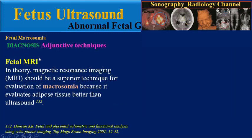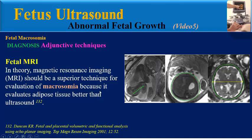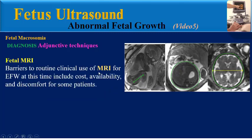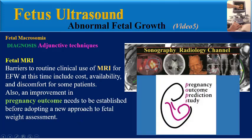Fetal MRI: In theory, MRI should be a superior technique for evaluation of macrosomia because it evaluates adipose tissue better than ultrasound. Barriers to routine clinical use of MRI for estimated fetal weight include cost, availability, and discomfort for some patients. Also, an improvement in pregnancy outcome needs to be established before adopting a new approach to fetal weight assessment.